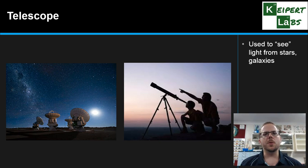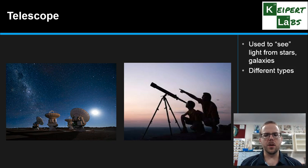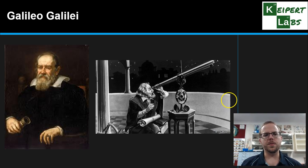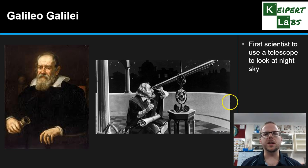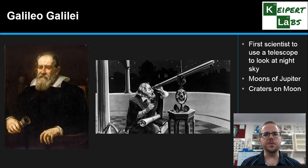We use telescopes to see the light from distant stars and galaxies and all sorts of different objects. They come in different types, and we'll look at how they work and go through some of those types. We'll start with the famous scientist Galileo Galilei — the first scientist to use the invention of the telescope to look at the night sky. He didn't invent the telescope, but he was the first to use it to study objects in the night sky, identifying the moons of Jupiter and craters on the moon.